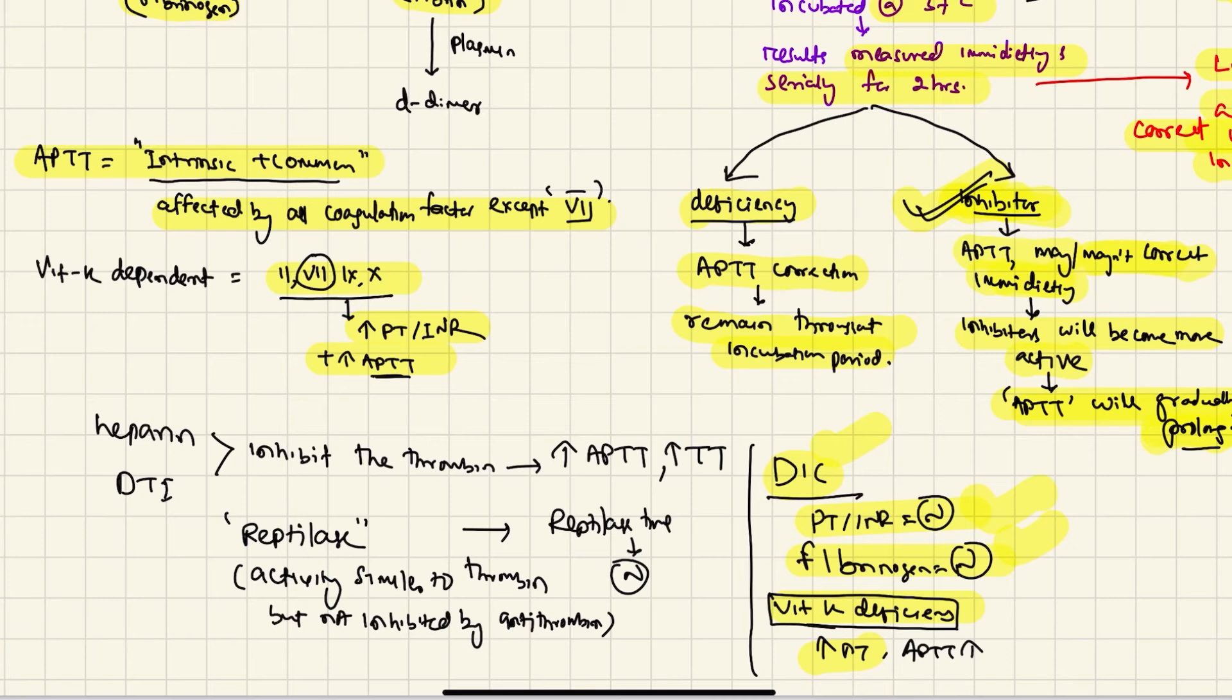Now what is reptilase time? In case of heparin and direct thrombin inhibitor, they will inhibit the thrombin, which will increase the aPTT and thrombin time. However, if you do not know whether your patient is having heparin in the blood or not and have an elevation of aPTT or TT, what you can do is put a reptilase test. Reptilase is an enzyme whose activity is similar to thrombin but is not influenced by antithrombin.